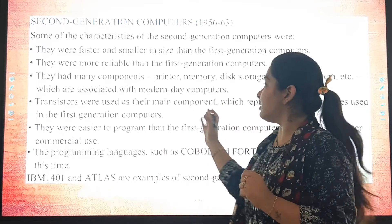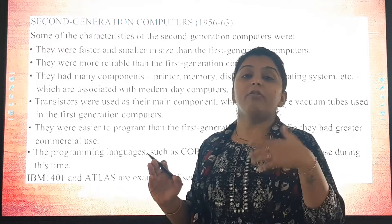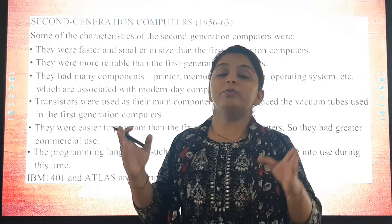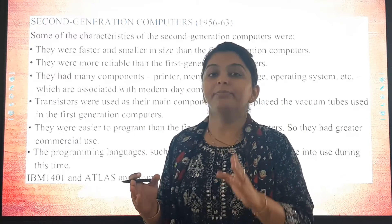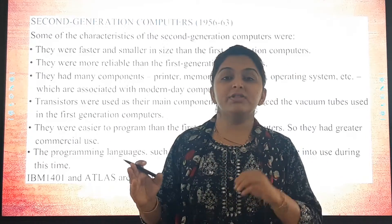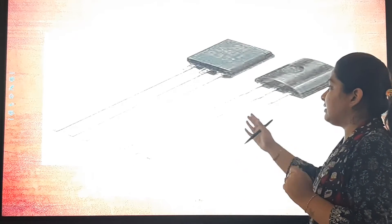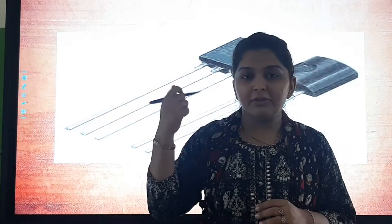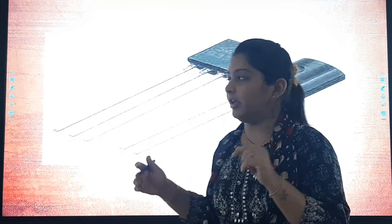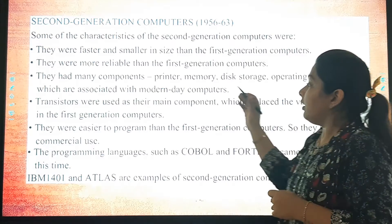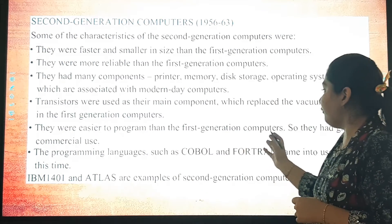Transistors were used as the main component in second generation computers. In the first generation computers, vacuum tubes were used as the main component. In the second generation, transistors replaced them. The picture of transistors is shown here — they may look similar to a fork in shape.